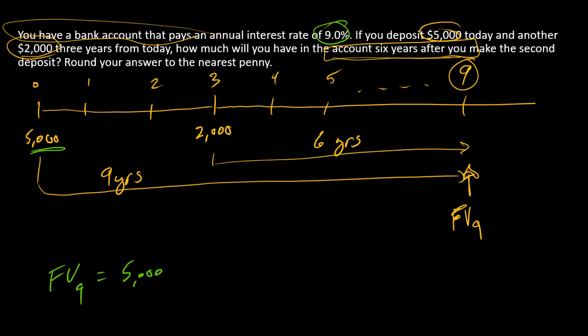That's $5,000 times one plus the discount rate raised to the ninth power. The $2,000 cash flow times one plus the discount rate, and that one we're moving forward six years, so we have a six as the exponent.